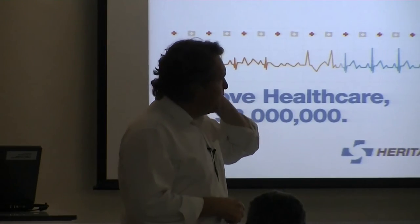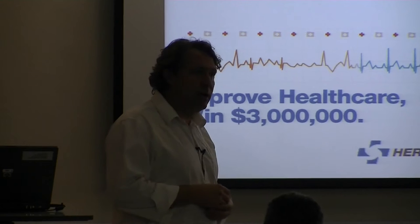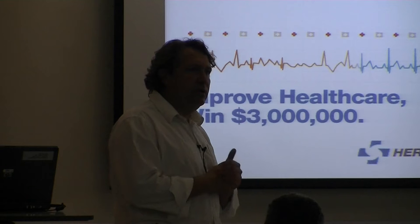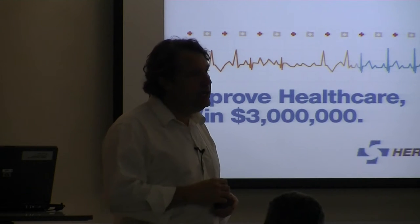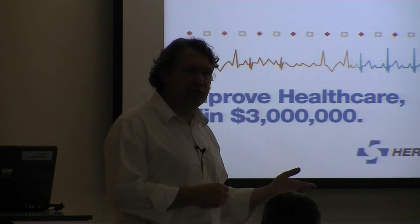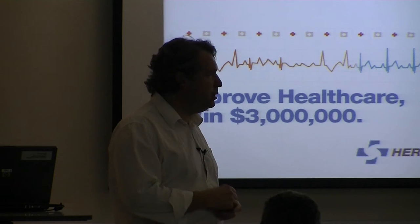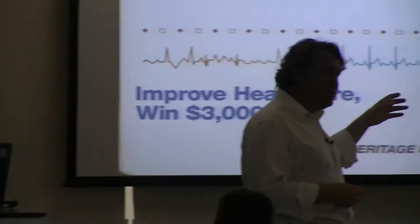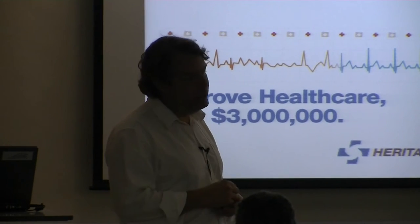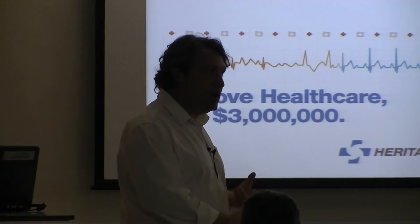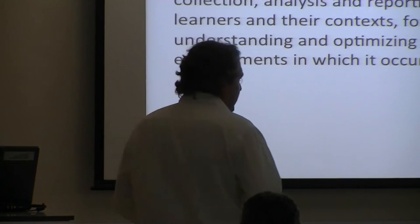One example is the Heritage Health Prize — similar to the Netflix Prize — where a $3 million prize was offered for the best algorithm to tell the system who is going to get sick. The reasoning is that if a hospital knows who's going to get sick, they can intervene before that person does, because preventative medicine is far easier than treating illness. It's about anticipating health decline and being able to intervene in time.